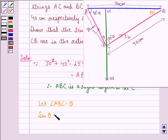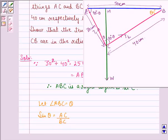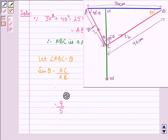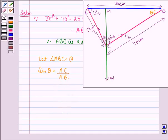Now, sin theta is equal to AC divided by AB. This is equal to 30 divided by 50 that is equal to 3 by 5.